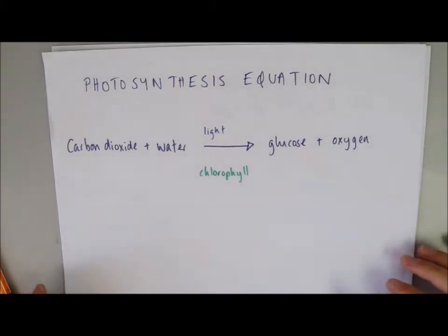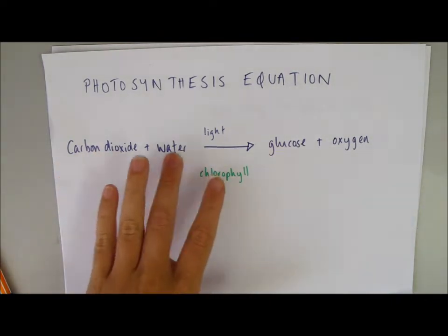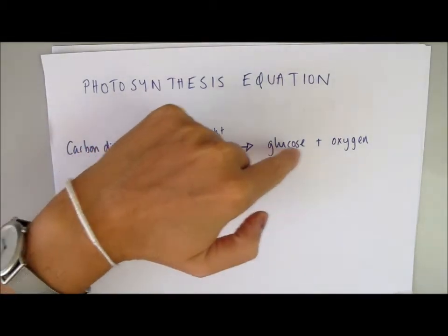Photosynthesis experiments. Before we start to look at an experiment that could prove this equation, let's remind ourselves of the equation. The equation for photosynthesis is carbon dioxide plus water in the presence of light and chlorophyll goes to glucose plus oxygen.